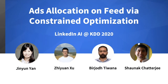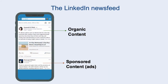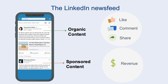In this video, we present ads allocation on feed using constrained optimization by LinkedIn AI teams. The news feed at LinkedIn has two major types of content: organic content and sponsored content. Organic content is created by users for their network and followers, while sponsored content or ads are created and paid by advertisers to their targeted audience. These two types of content drive the two most critical utilities: user engagement and revenue.